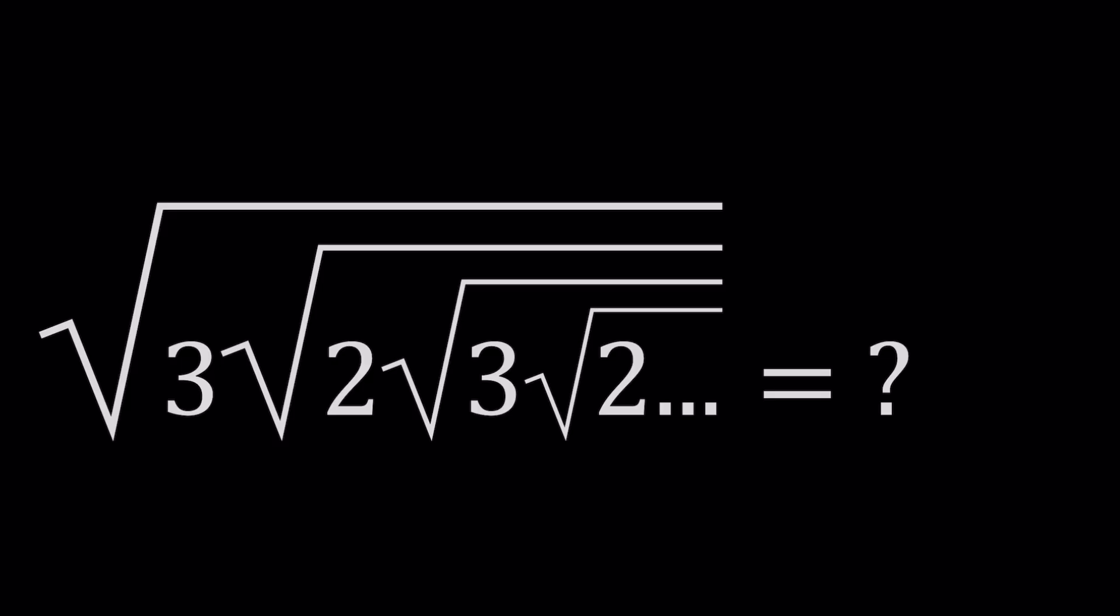So we have the square root of 3 times the square root of 2 times the square root of 3 times the square root of 2, so on and so forth. Hopefully you get the idea. 3 and 2 alternates and they're all being multiplied. So we have an infinite radical expression.